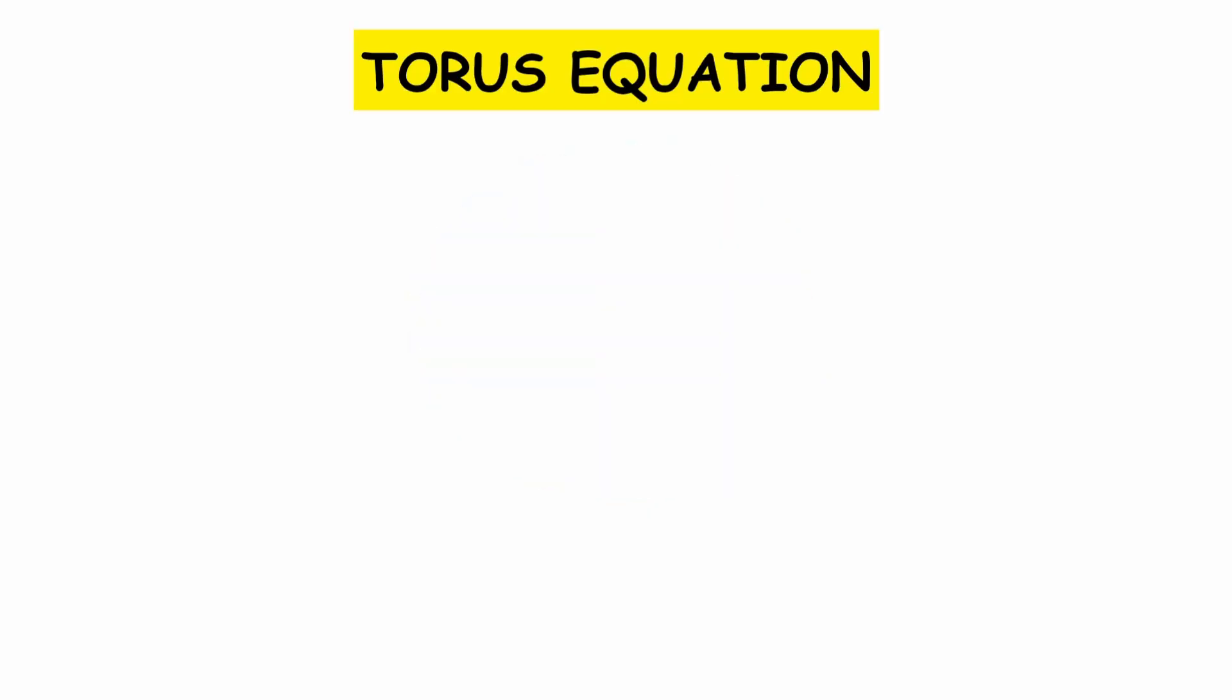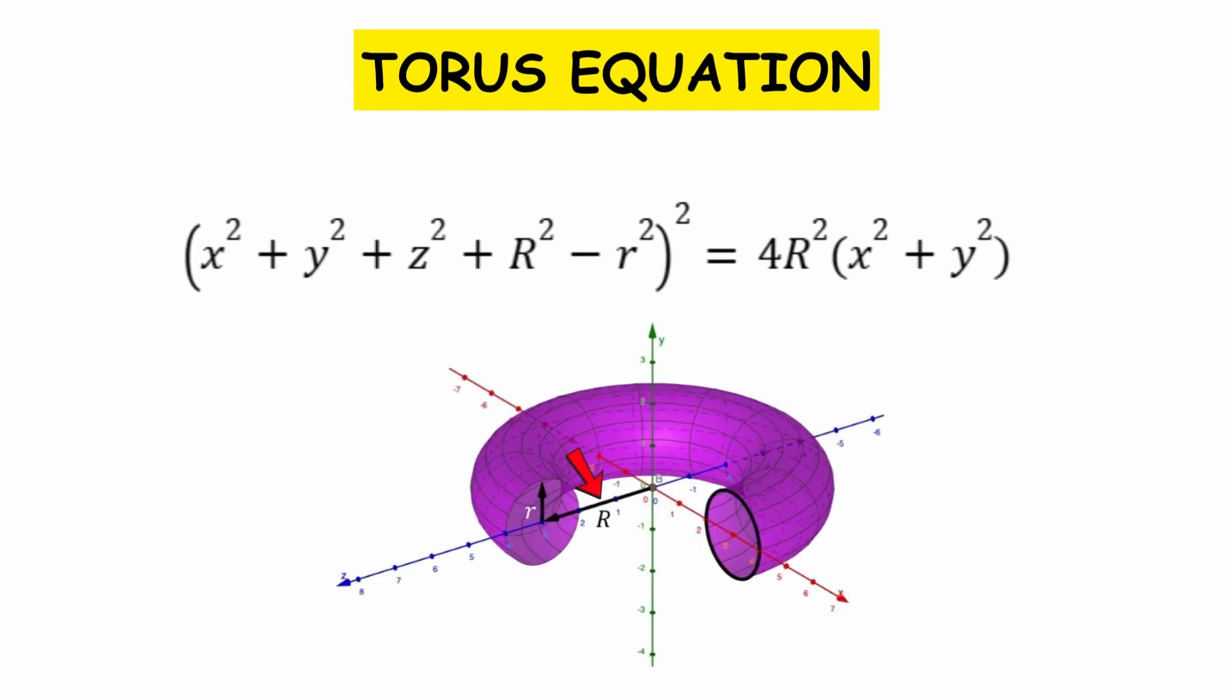Its equation in Cartesian coordinates is x squared plus y squared plus z squared plus r squared minus r squared squared squared equals 4r squared times x squared plus y squared. Where r is the major radius, corresponding to the radius of the tube being rotated.